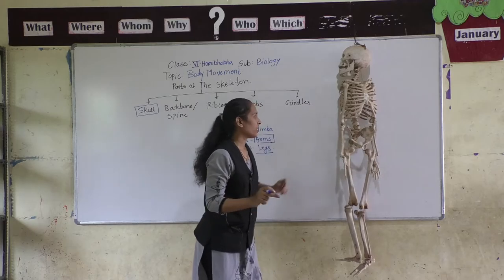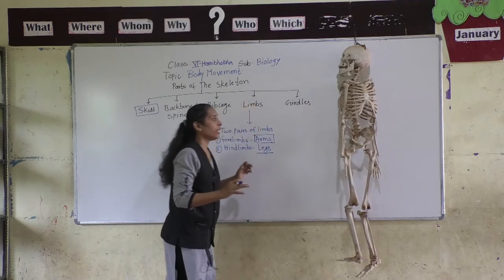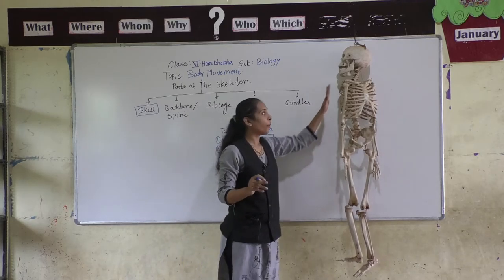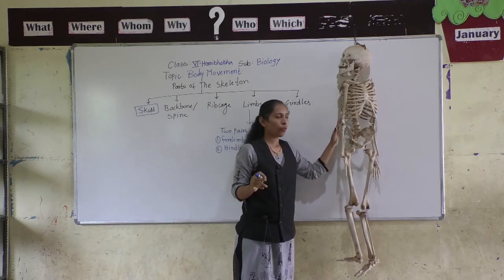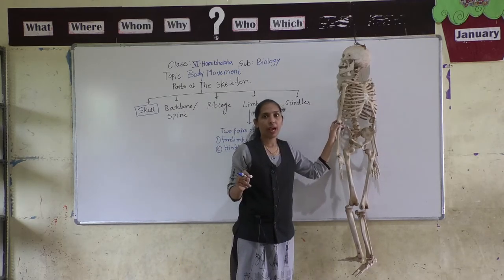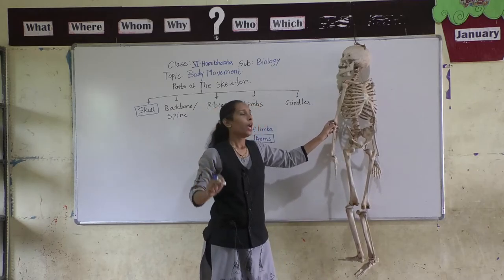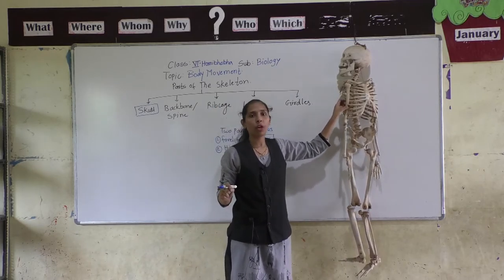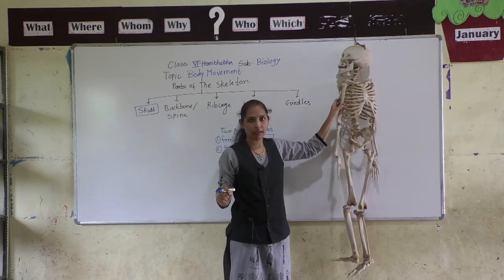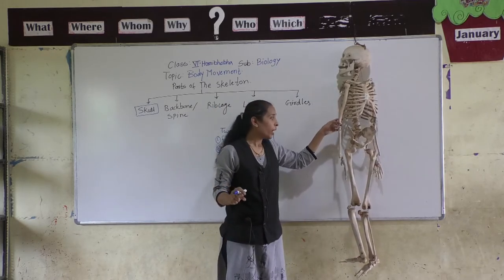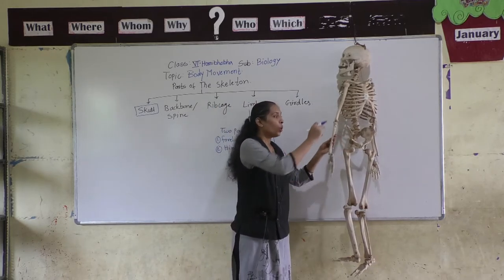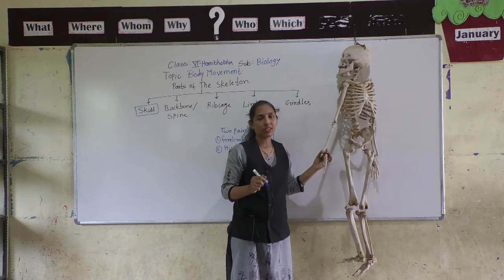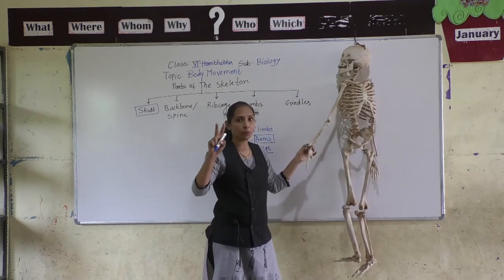The arm consists of two parts. The upper part of the arm has only one bone, and the name of that bone is Humerus. The lower portion of the arm consists of two bones.